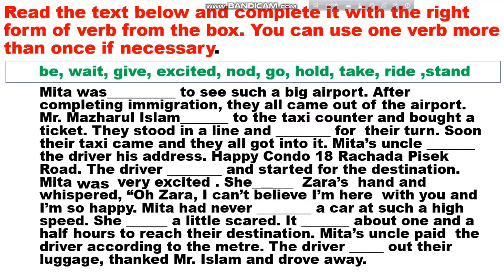Read the text below and complete it with the right form of verb from the box. You can use one verb more than once. The words in the box are: Be, Wait, Give, Excited, Note, Go, Hold, Take, Right, Stand. Nita was excited to see Bangkok.